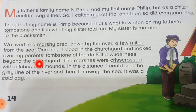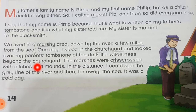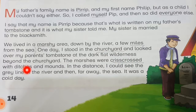He lives in a marshy area. A marsh is a piece of land — an area that is filled with a lot of water and different plants growing in the water. A churchyard is a place where there are graves, an area surrounding the church. He is telling about the time he visited his parents' graves. The marshes were crisscrossed, which means that the ditches and mounds were spread all over.